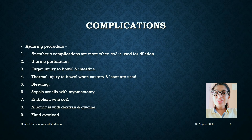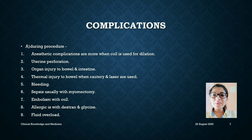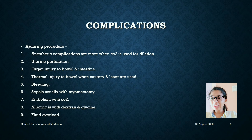Complications during the procedure include: anesthesia complications, which are more when CO2 is used for dilation, uterine perforation, organ injury to bowel and intestine, thermal injury to bowel when cautery and laser are used, bleeding, sepsis usually with myomectomy, embolism with CO2, allergic reactions with dextran and glycine, and fluid overload.